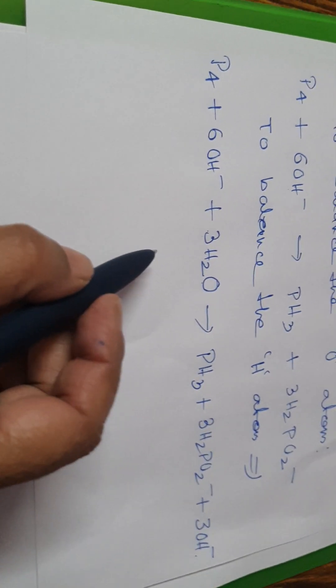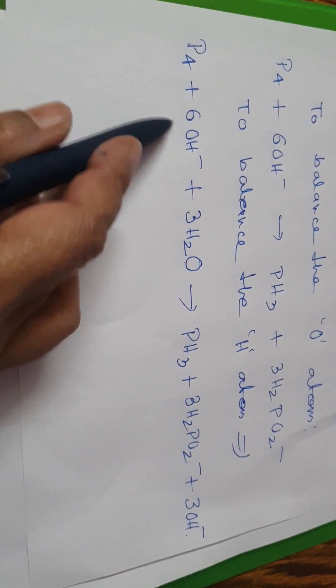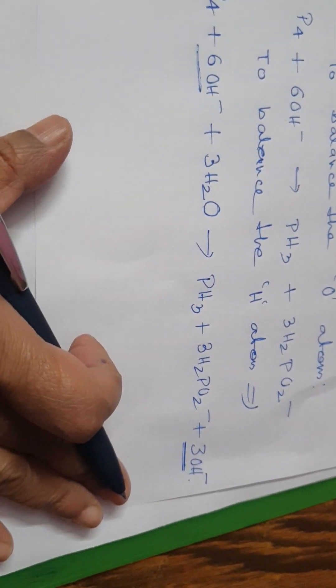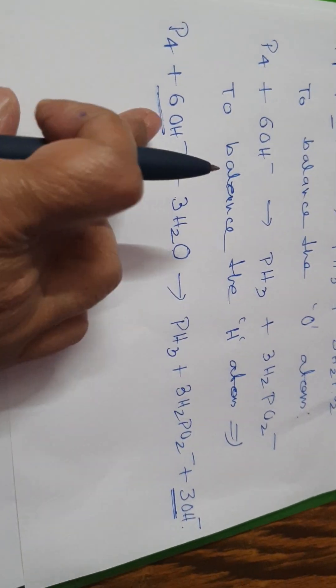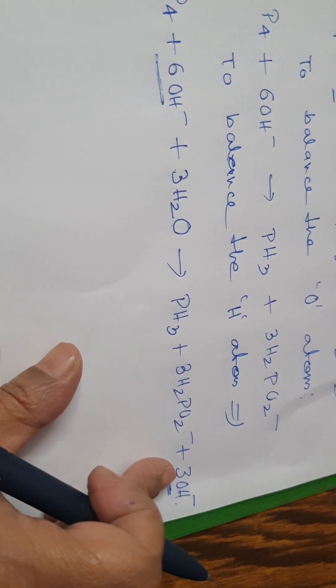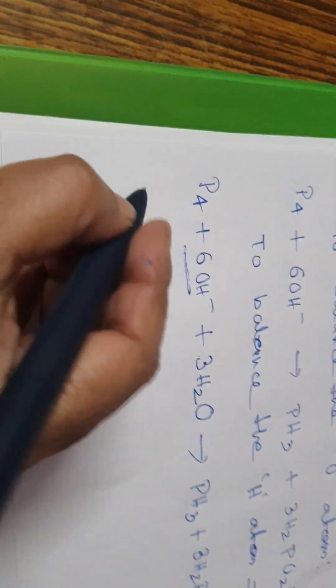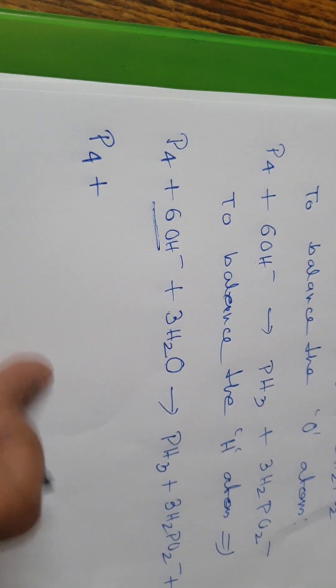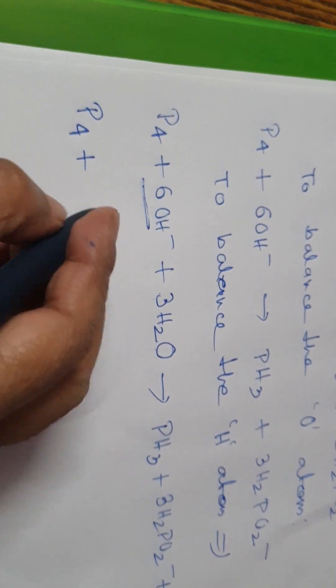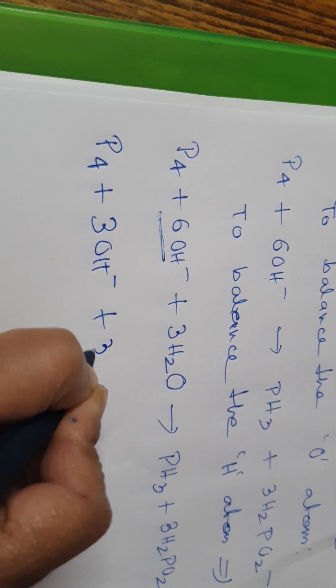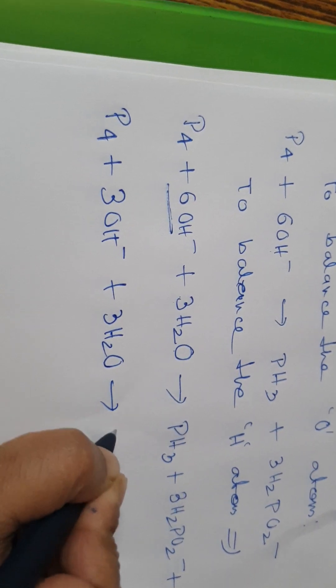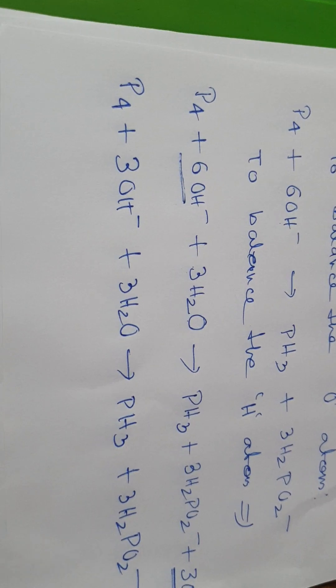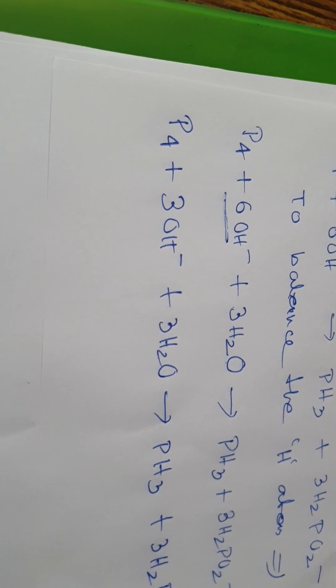OK, now look, we have a problem. On this side 3 H2O and 6 OH minus. On this side also 3 OH minus. So on both sides of equation, the same thing cannot remain. So we have to bring it to one side. If we bring this to this side, it will become minus, we don't want that. We have to bring this to this side. So ultimately, what we will do: P4 plus 6 OH minus, bring here, then minus 3 OH minus, that is, adding together, 3 OH minus plus 3 H2O. This will give us PH3 plus 3 H2PO2 minus. My reaction has been balanced totally.